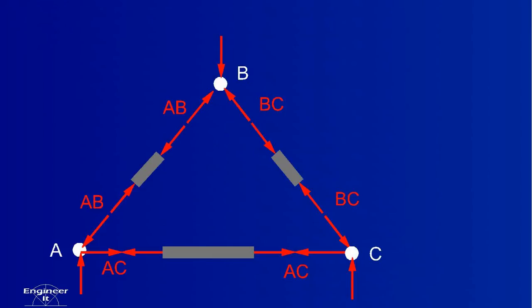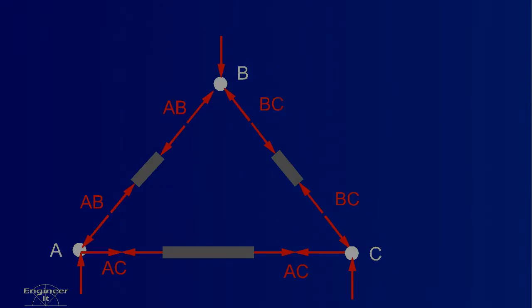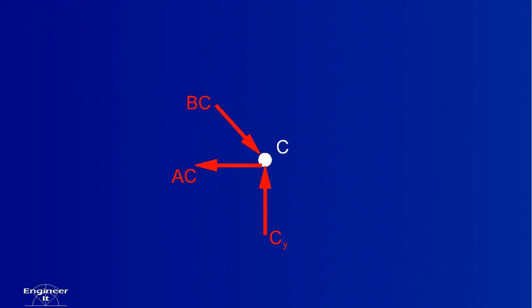If the answers are correct, joint C's free body diagram will show complete equilibrium. To solve for these components, we can use ratios.